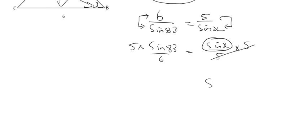And so we end up with sin x on the right-hand side, and 5 times by the sin of 83 on the left over 6. And so if you type all of that on the left in on your calculator, we end up with sin x equals to 0.827.